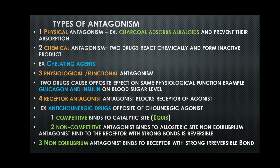Physiological or functional antagonism occurs when two drugs cause opposite effects on the same physiological function. For example, glucagon and insulin — they produce opposite effects on the same function, one increasing and the other decreasing blood glucose levels.